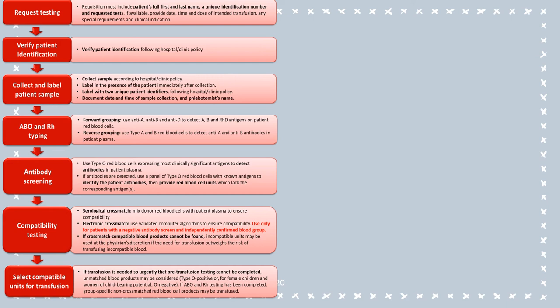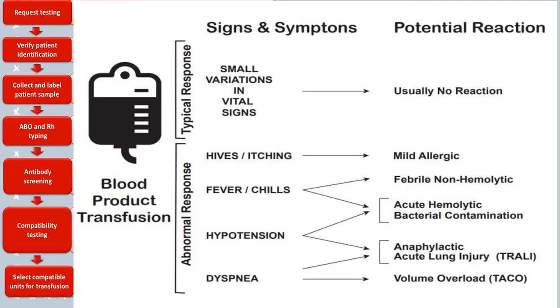Before performing the transfusion, you need to perform simple steps such as requesting testing, verification of the patient's identification, collecting and labelling patient samples, ABO and RH typing, antibody screening and compatibility testing. Only after all of these steps can you select a compatible unit for transfusion. During blood product transfusion, the patient may have a typical response — no reactions — or an abnormal response with symptoms such as itching, fever, chills, hypotension and dyspnea. On the following slide you will watch a video about complications that might occur after blood transfusion.